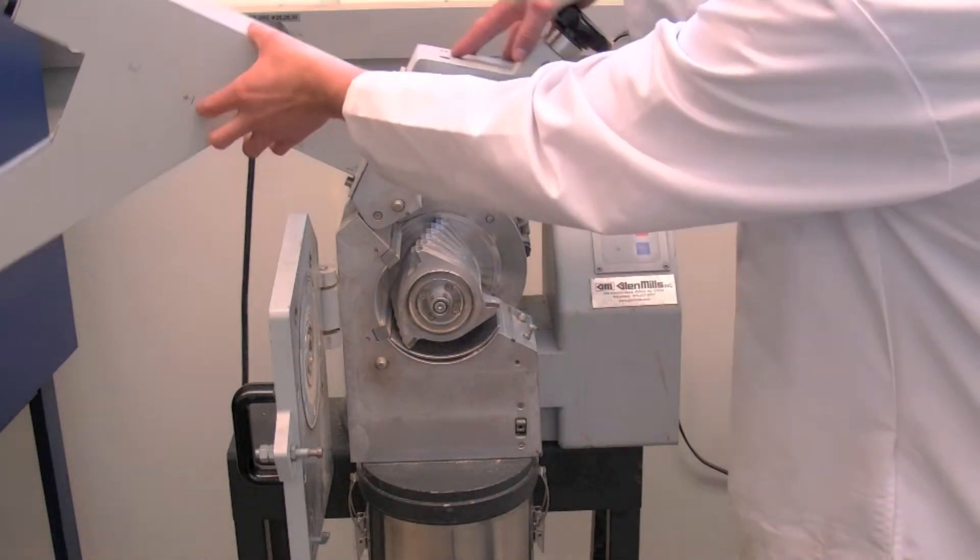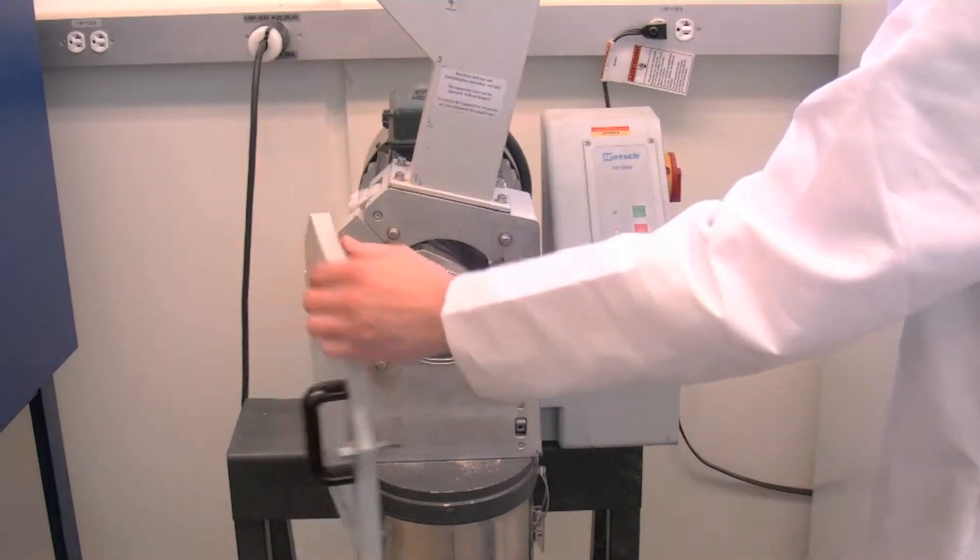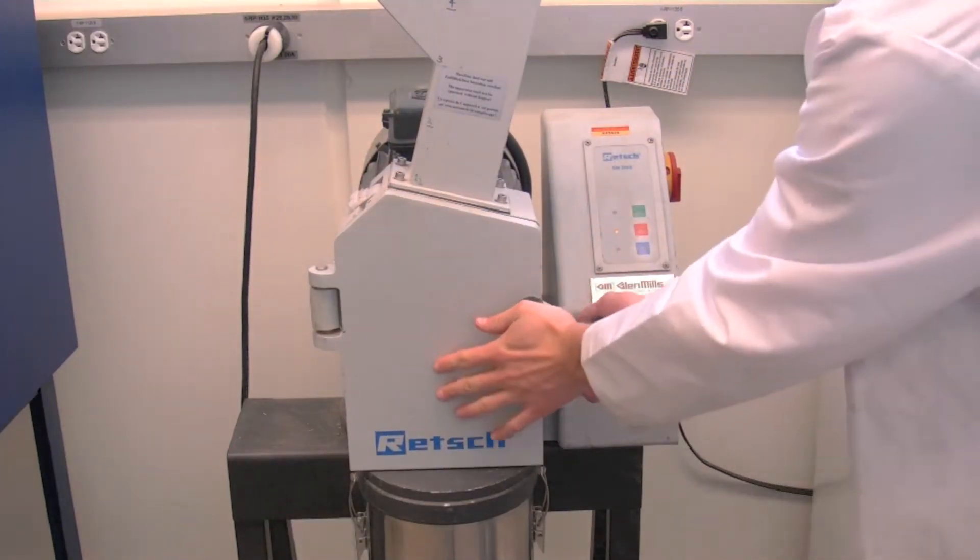Pull the hopper back into place, close the door, and turn the hand wheel clockwise to lock it.